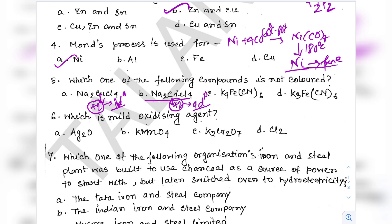Question 7: Which iron and steel plant was built to use charcoal as a source of power but later switched to hydro electricity? Options are Tata Iron and Steel Company, Indian Iron and Steel Company, Mysore Iron and Steel Limited, and Hindustan Steel Limited. When thinking about industrialization in India, the name that first comes to mind is the Tata Group — and indeed, option A, the Tata Iron and Steel Company, is the correct answer.